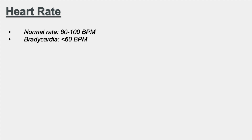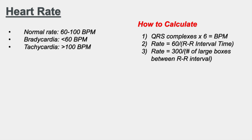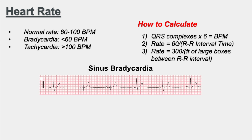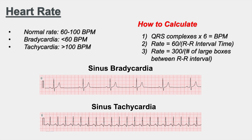Now, how do we determine heart rate from an ECG? A normal heart rate is 60 to 100 beats per minute. Bradycardia is less than 60 and tachycardia is greater than 100 beats per minute. There are three methods to calculate heart rate: method one is counting QRS complexes in a 10-second strip and multiplying by six; method two is taking 60 divided by the RR interval time; and method three is taking 300 divided by the number of large boxes between RR intervals.